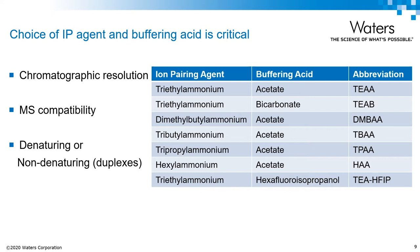Another consideration you need to make is whether or not your mobile phase should be denaturing or not. Although TEA-HFIP is the gold standard for MS analysis, it is a denaturing mobile phase, which may or may not be desired. So at a very basic level, we want to achieve desired chromatographic resolution, MS compatibility if our analysis requires it, and we need to consider whether or not our mobile phase should be denaturing or non-denaturing.